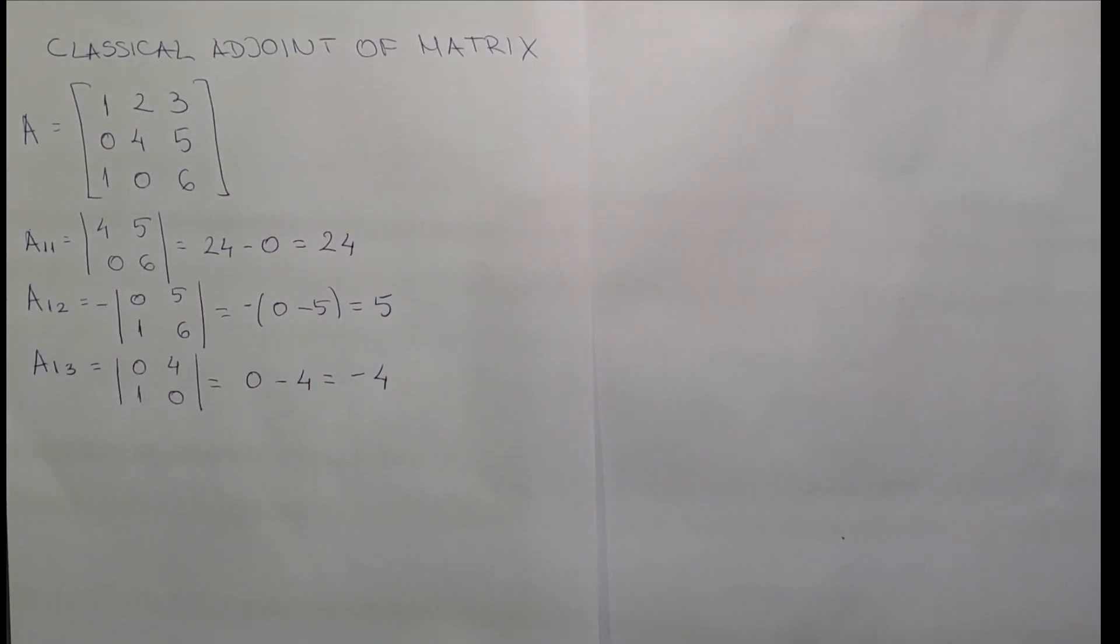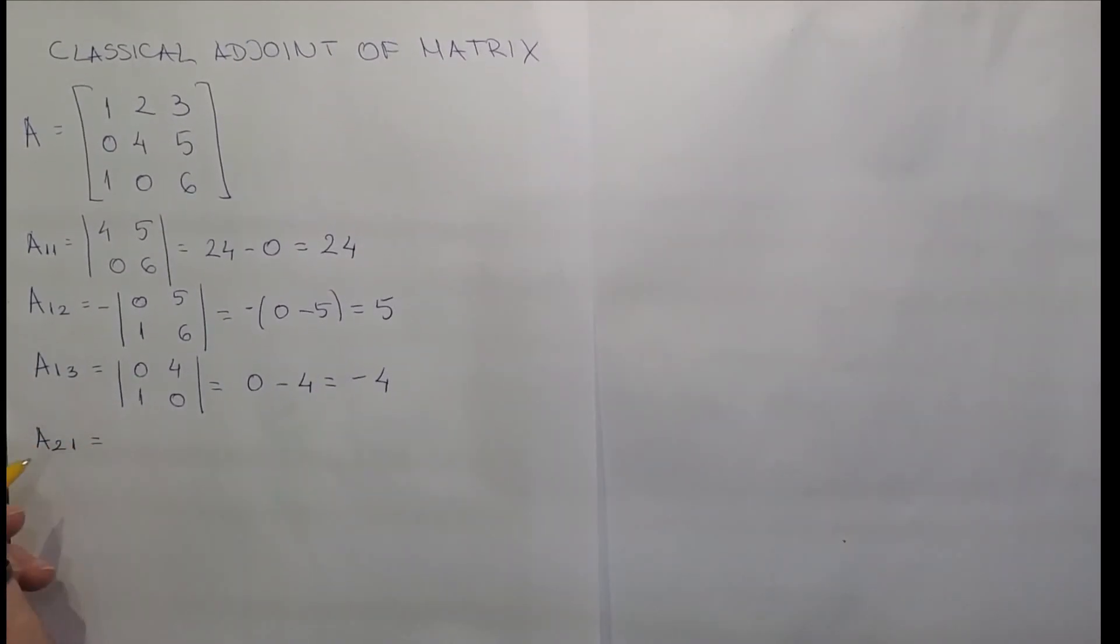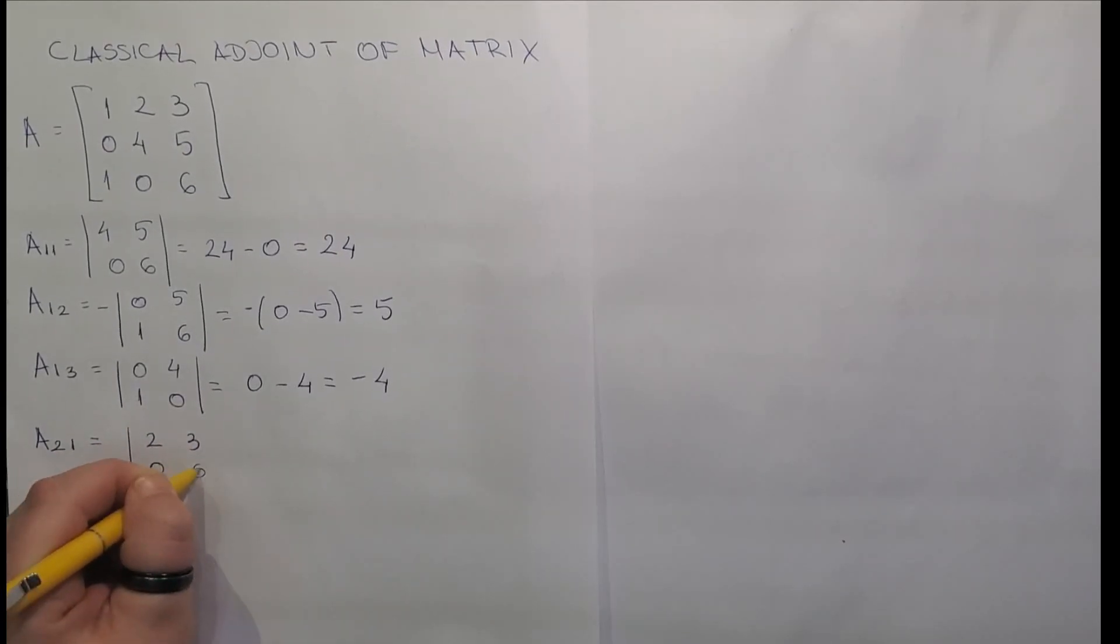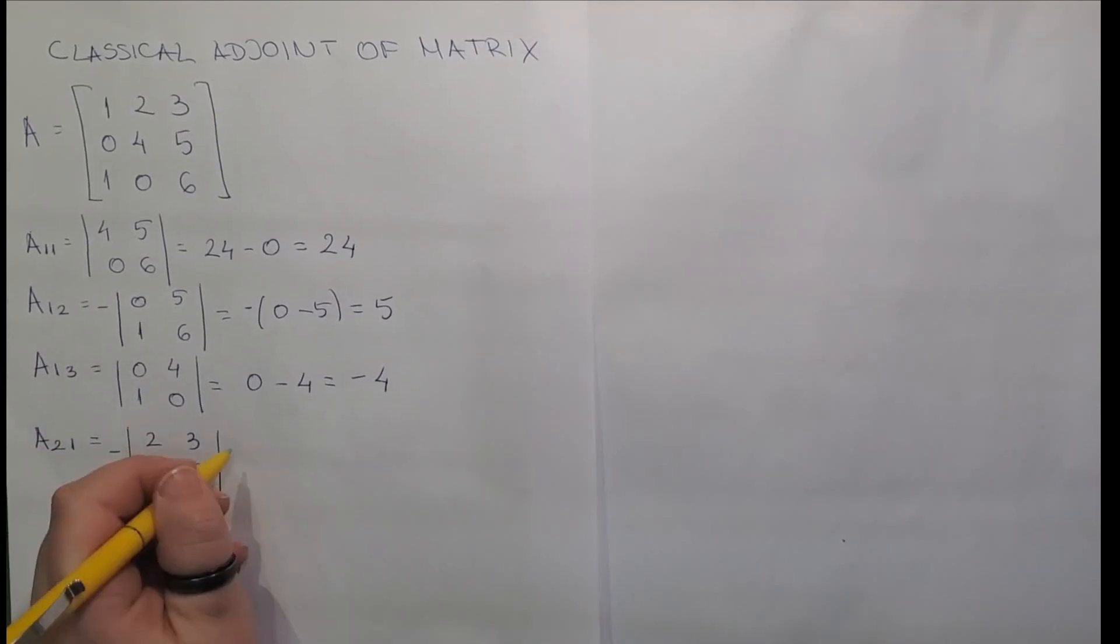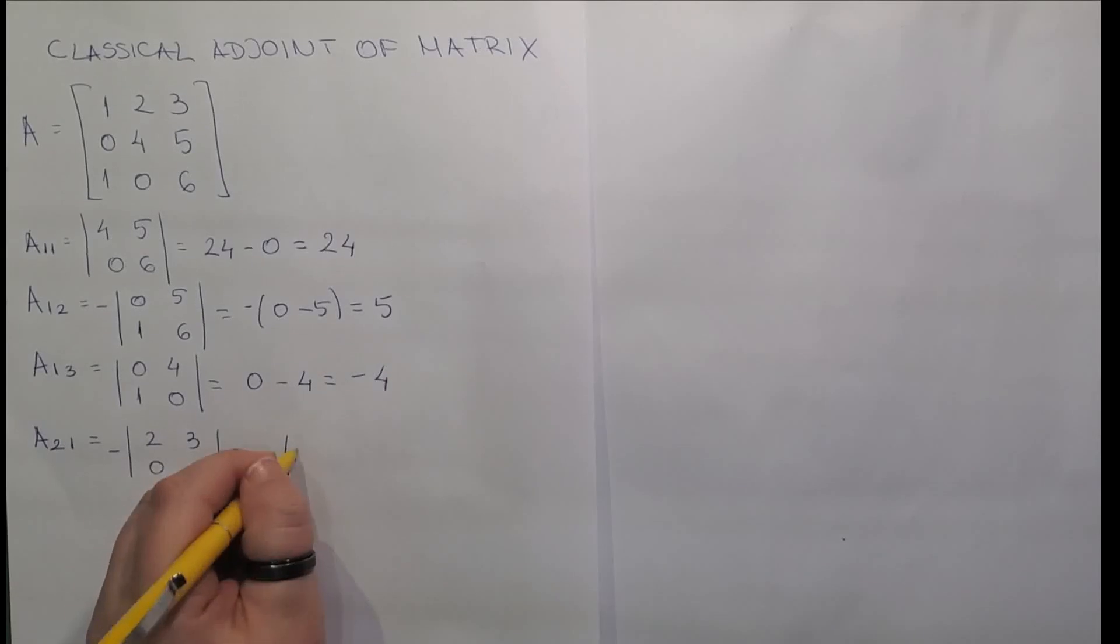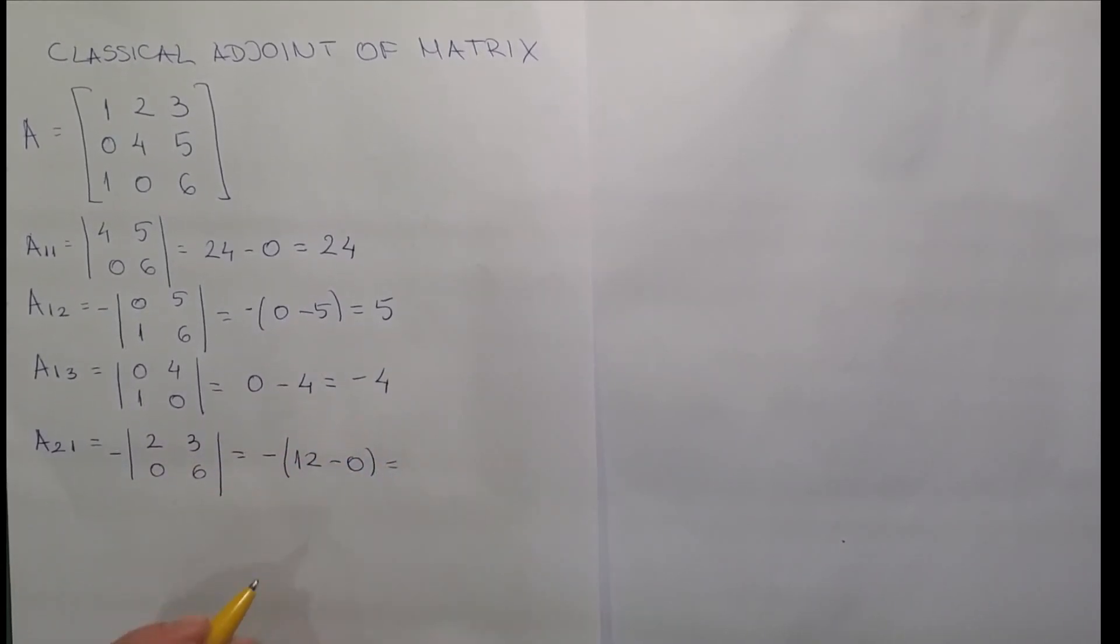Now for the second section, we have a21. For this element, we are eliminating row number 2 and column number 1. So we have left with 2, 3, 0, 6. But we have to be aware that there is a minus sign here at the front. So we have minus 2 by 6 is 12, minus 0. This element is equal to minus 12.